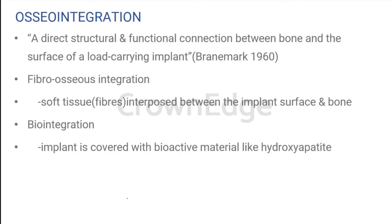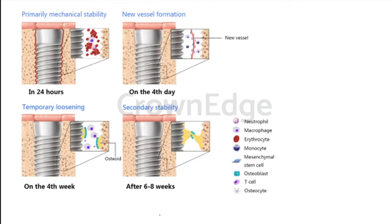Once we have placed it, we check for the torque. Why the torque is so important is because osseointegration — that is the fusing of your implant to the bone — depends on what torque is available. Ideally, you need a minimum of at least 30 Newton per centimeter square as your torque, which can go up to 70 to 80 in cases of your D1 bones. So this is what usually happens after we place the implant. In the first 24 hours, we see erythrocytes, macrophages, and a lot of inflammatory markers surrounding the implant, continuing through different time periods from 24 hours up to the 6th to 8th week.